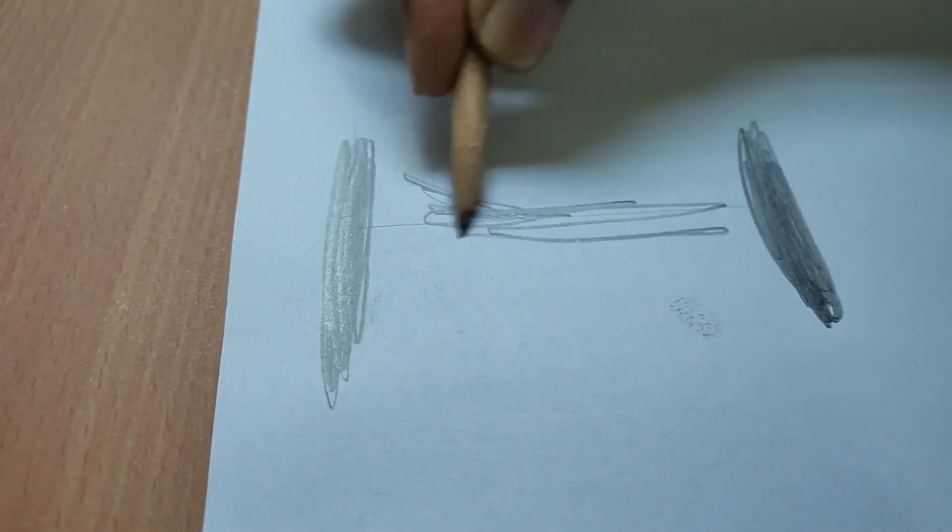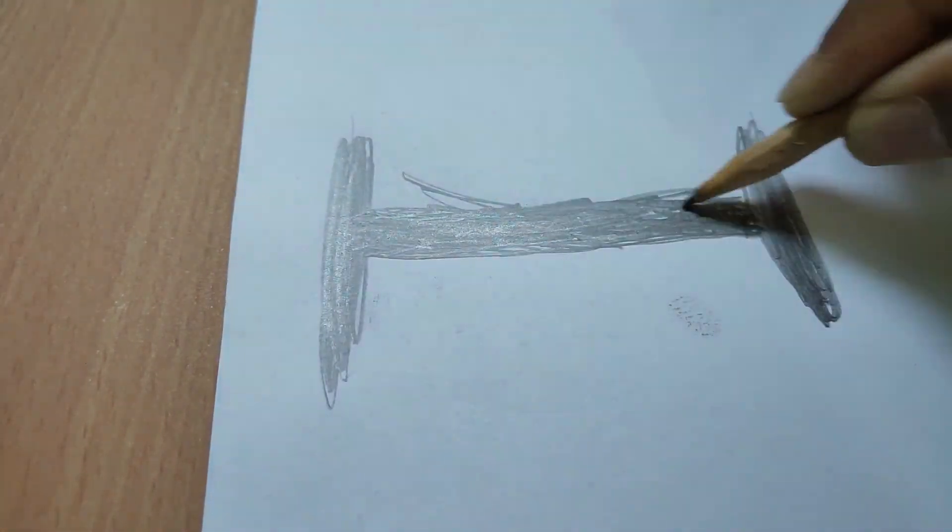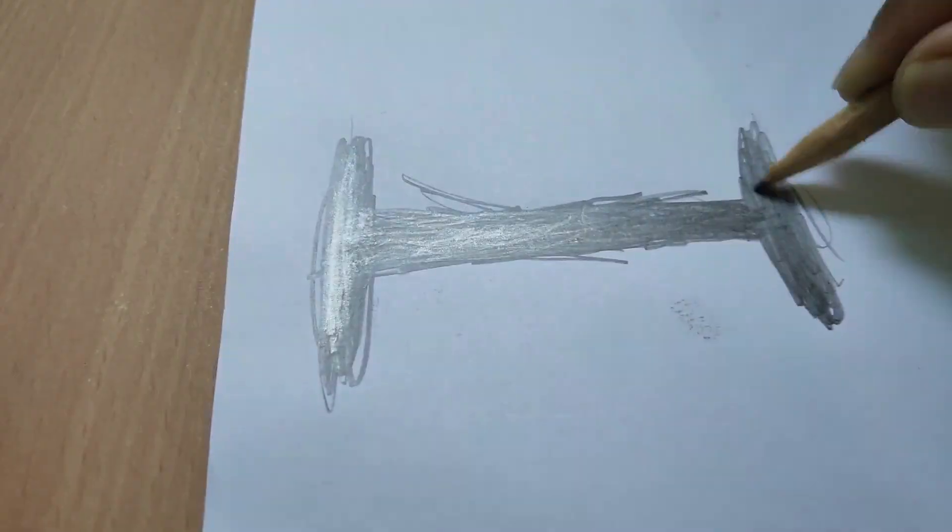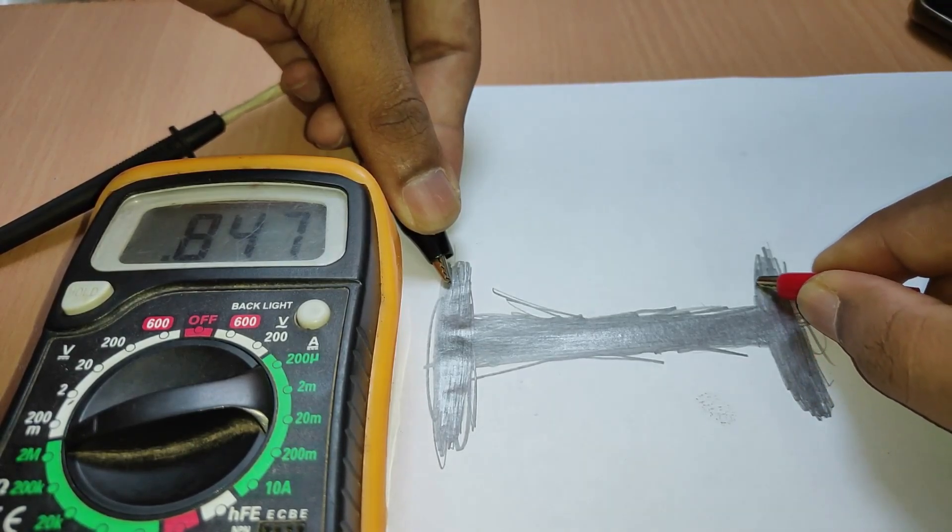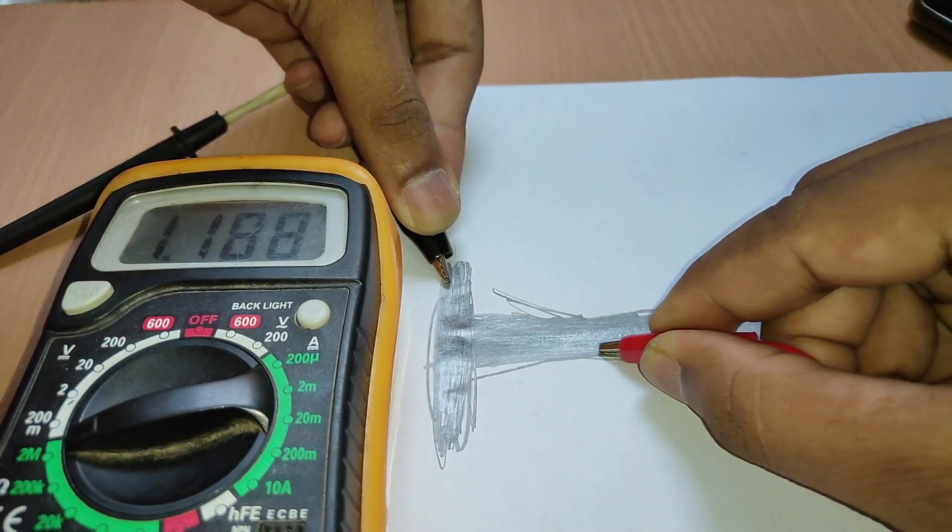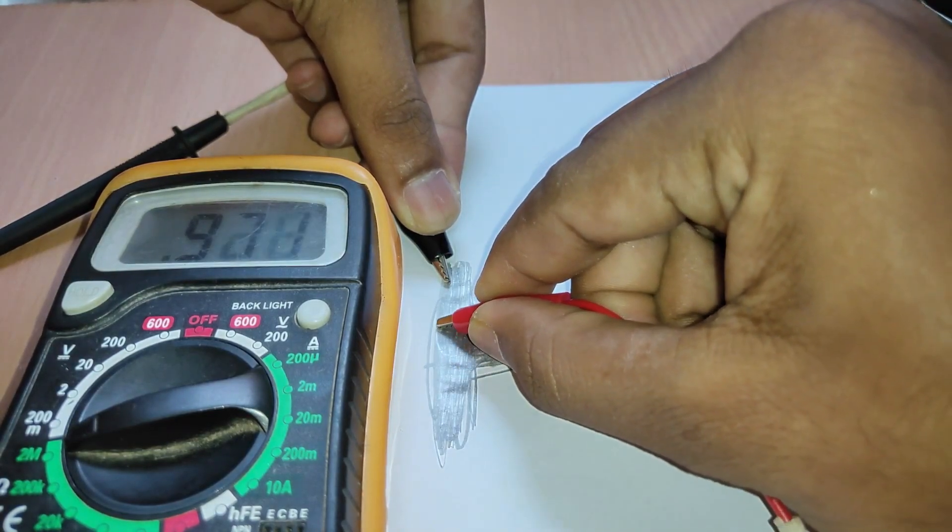You can even create a simple resistor at home, just by using a pencil and paper. As pencil contains graphite, it possesses some electrical resistance. Now when I move the probes, the resistance varies, which is seen in the multimeter.